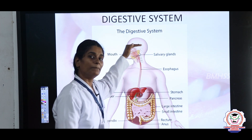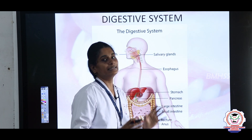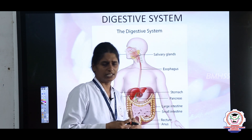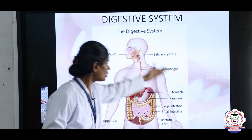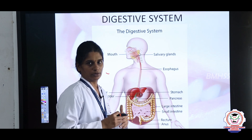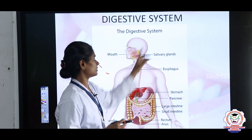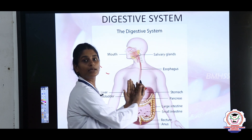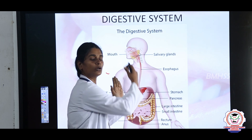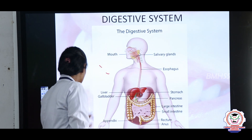The process of breaking down food into simpler substances is called digestion. Many organs work together to digest the food, and these organs together form a system called the digestive system. Now we are going to see what are the organs that help in digestion.